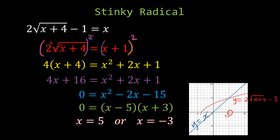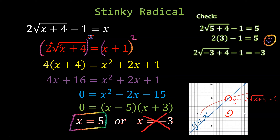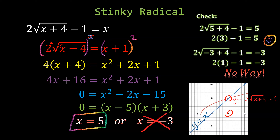Factoring gives x = 5 or x = negative 3. But our graph shows only one intersection — the answer is 5. If you didn't visualize the graph, you'd check both. Plugging in 5: 2 times 3 minus 1 equals 5 — that's correct. Plugging in negative 3: 2 times 1 minus 1 equals negative 3 — no way, that's not valid. So x = negative 3 is not a solution.